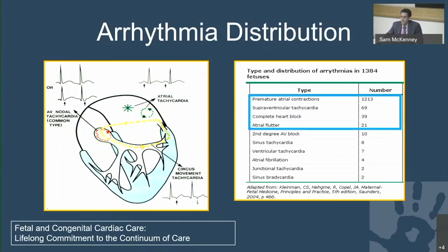We're going to focus on the top four: premature atrial contractions, SVT, heart block, and atrial flutter for the purposes of this talk, starting with what's most common.